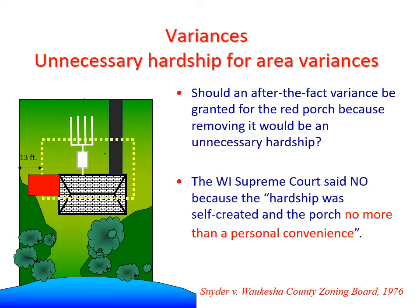In the Snyder case, a property owner built a porch, shown in red, without a building permit, and then applied for an after-the-fact variance. The porch, which was to be used as a family room, encroached into the side yard setback. The yellow dotted lines show the setbacks for the lot. The question for the Supreme Court was: should an after-the-fact variance be granted for the red porch because removing it would be an unnecessary hardship? The Wisconsin Supreme Court said no — the variance shouldn't be granted because the hardship was self-created and the porch is no more than a personal convenience. This is a key phrase for zoning board members: is a proposal a personal convenience or does it rise to the level of an unnecessary hardship?